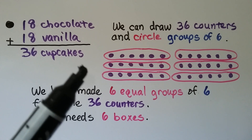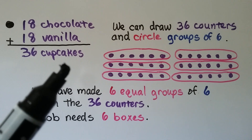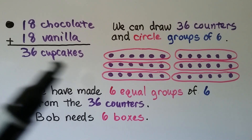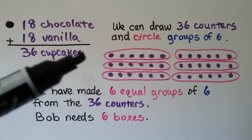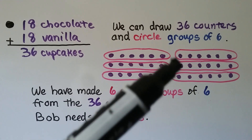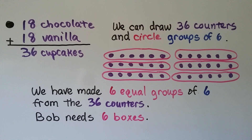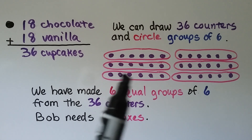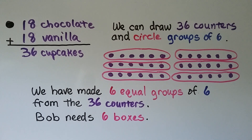We circle equal groups of six. We have made 1, 2, 3, 4, 5, 6 equal groups of six from the 36 counters. That means Bob needs six boxes — he would have six boxes with six cupcakes in each box.